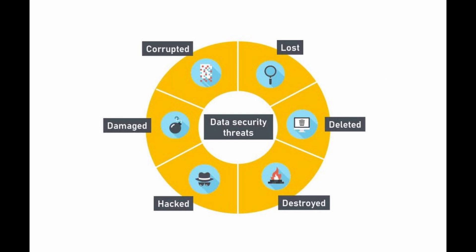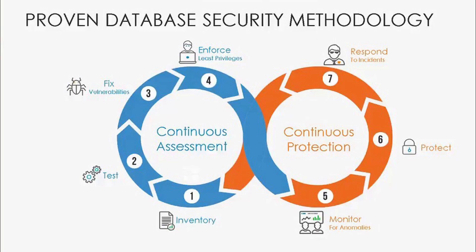Every industry has its own requirements for what to protect and how to protect it, but common types of data that need to be secured include personal information about your employees and customers, financial data like credit card numbers, banking information, and corporate financial statements, health information like services received, diagnoses, and test results, intellectual property like trade secrets and patents, and business operations data like supply chain information and production processes.